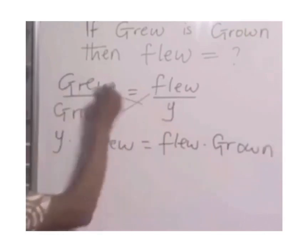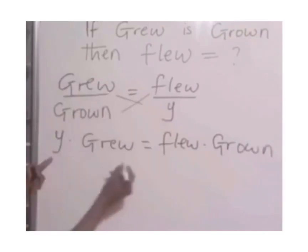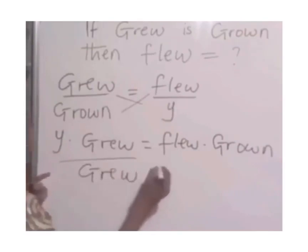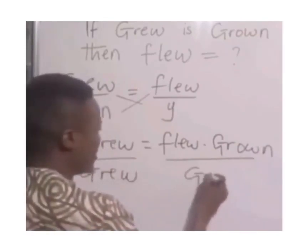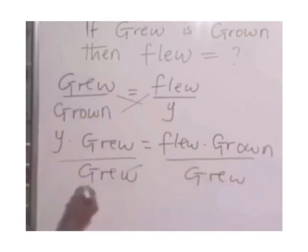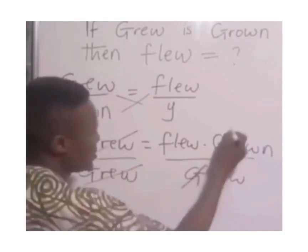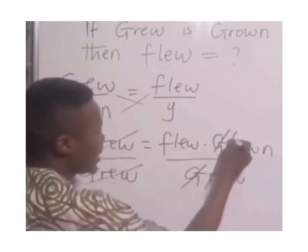So to get your y, divide both sides by grew. Divide both sides by grew so that grew will cancel grew here.